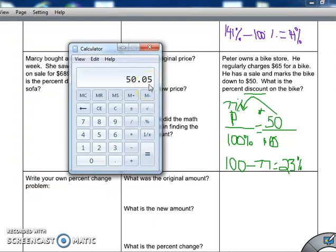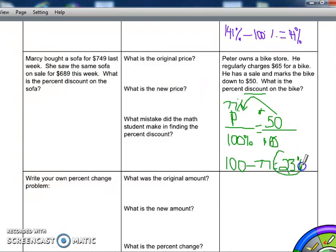Now remember, this isn't exactly 50, but remember that we rounded. So this ends up working out. So that's how that works. So your answer is a 23% discount. And I got that by finding the percent and then subtracting it from 100.